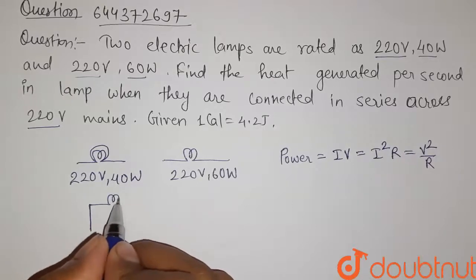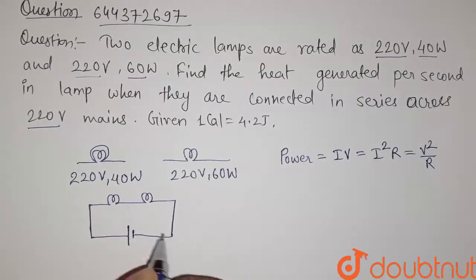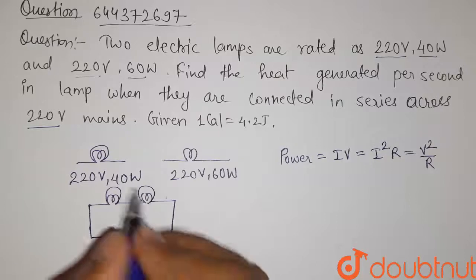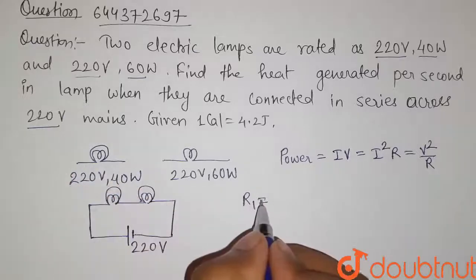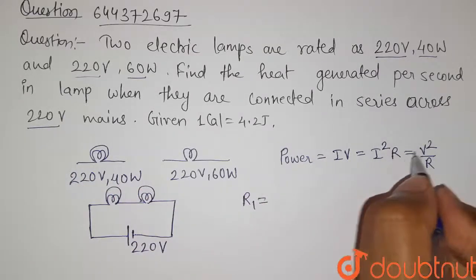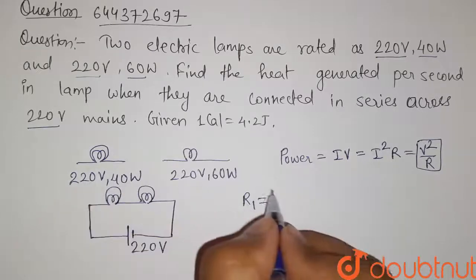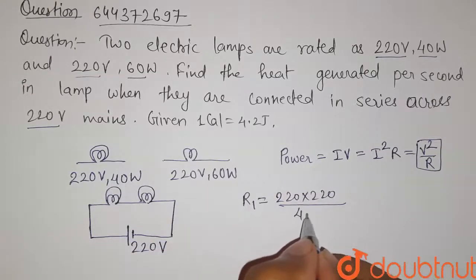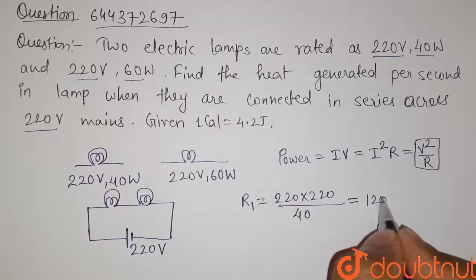We need to find the power when these two lamps are connected in series across a battery of 220 volts. First, let us find the resistance of the two bulbs. Resistance of Lamp 1: R1 = V² / P = 220 × 220 / 40 = 1210 ohm.